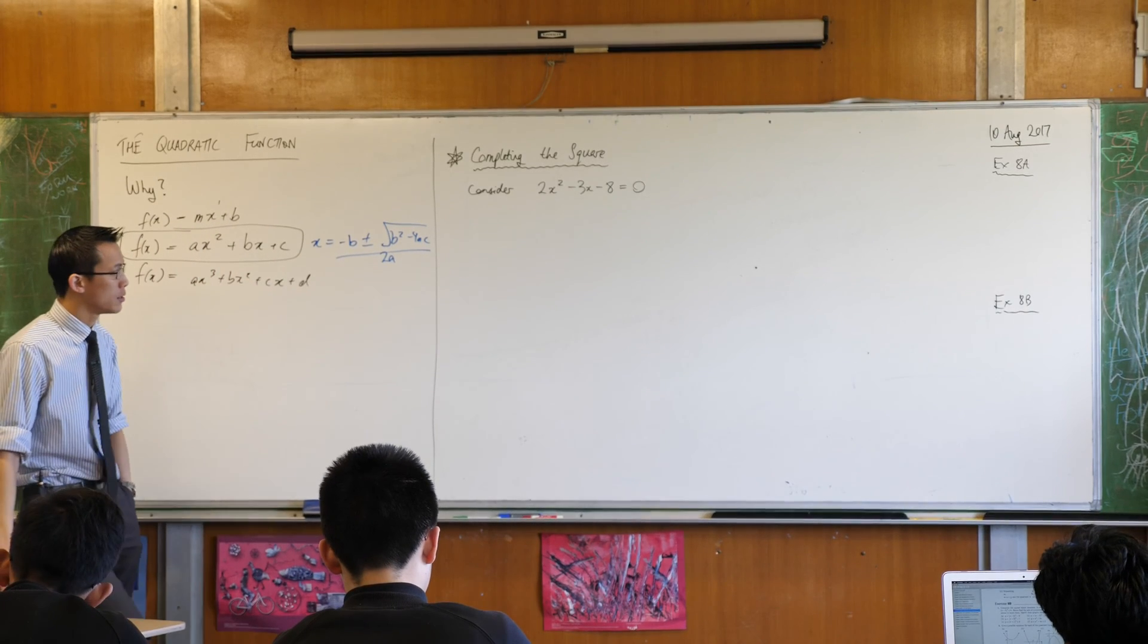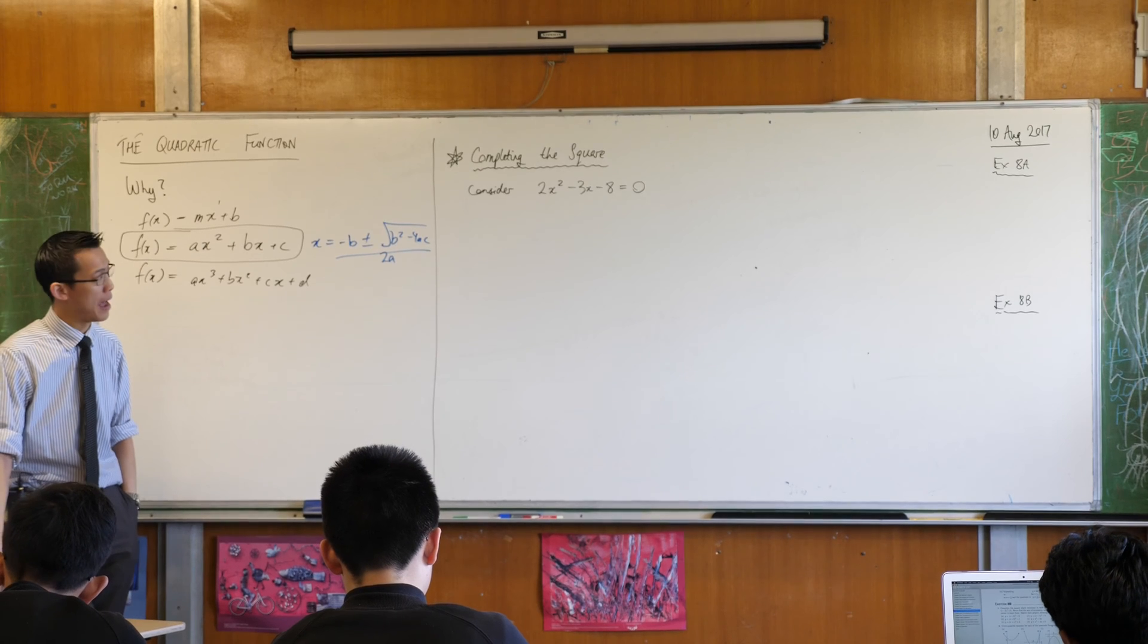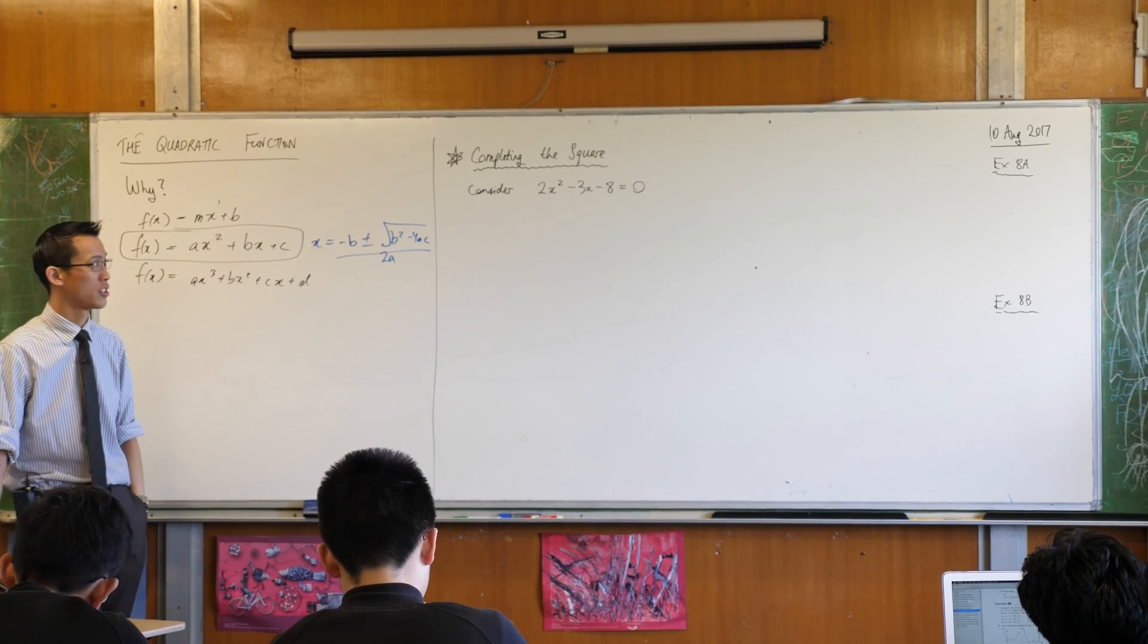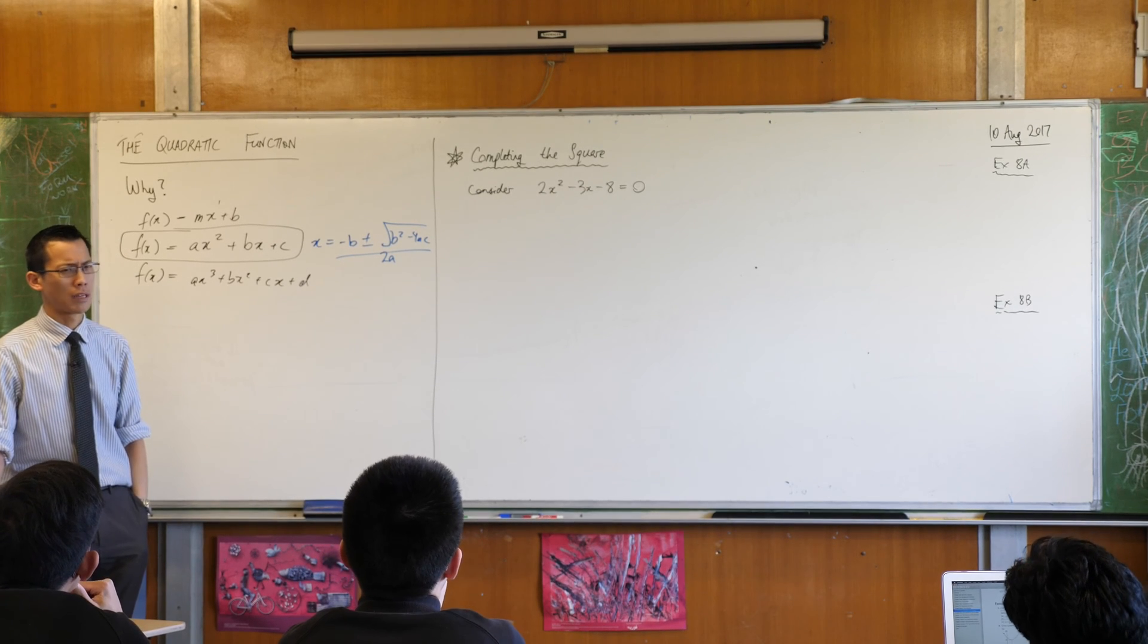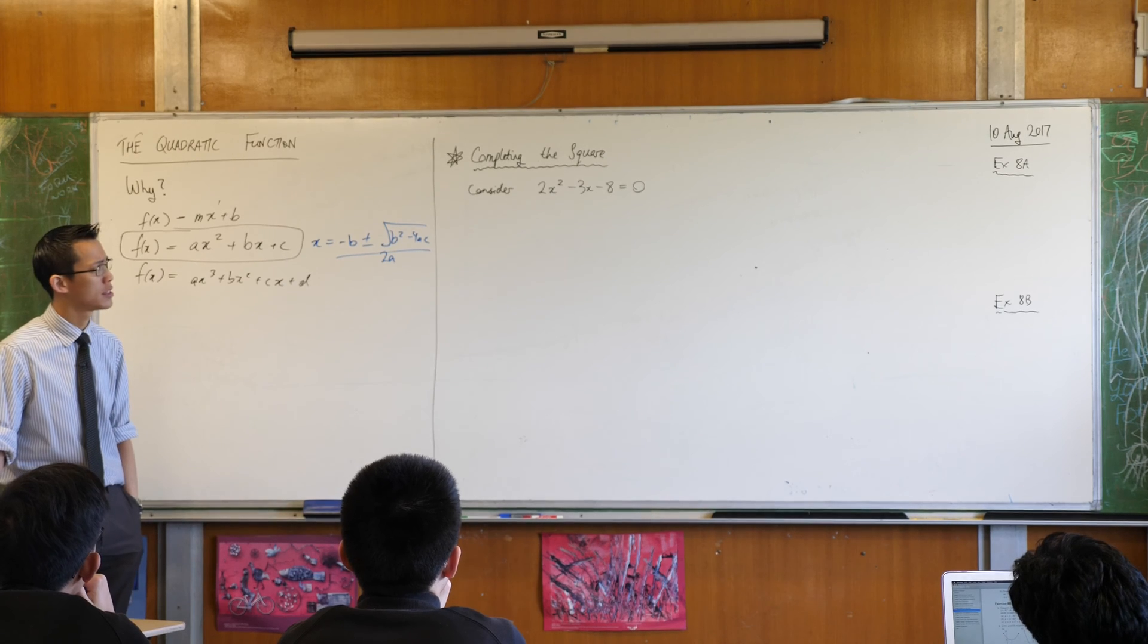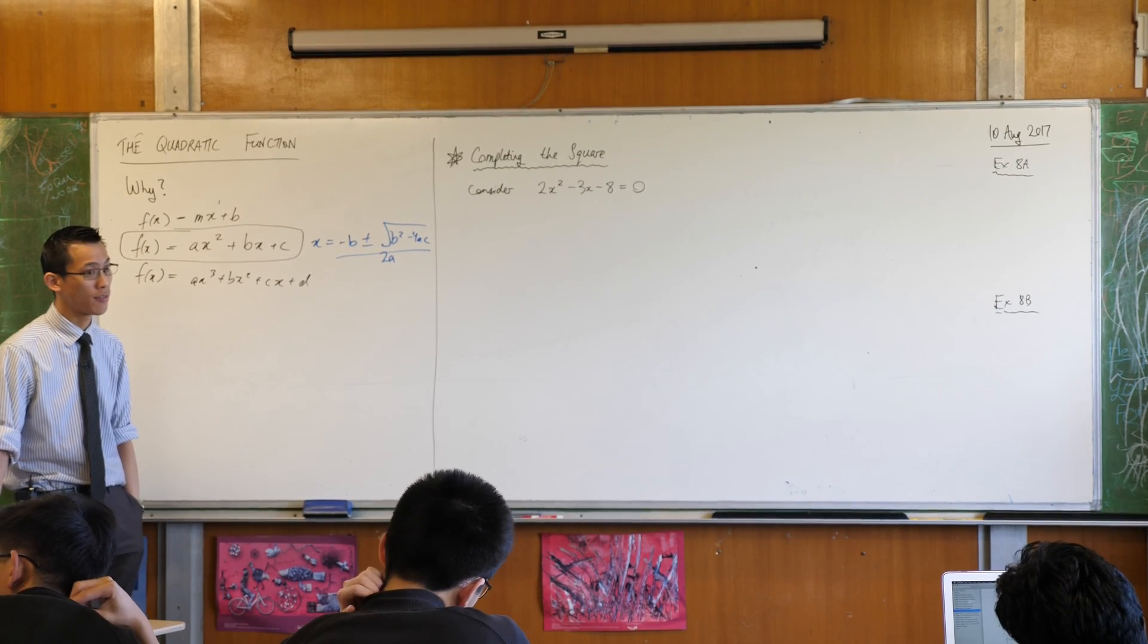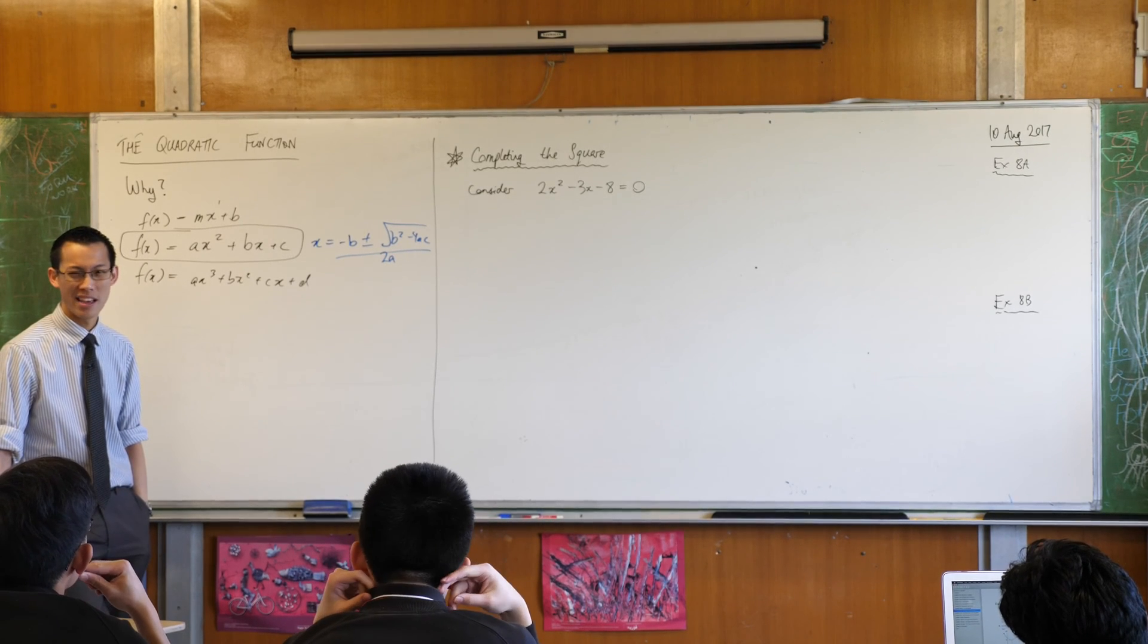So we're gonna have a look at this. Now one of the reasons why we have completed the square up our sleeve is because many questions will resist the ability to be factorized simply. Now I just made this up but when you have a look what kind of pair of numbers are you trying to think of? A pair of numbers that adds to negative 3 and multiplies to negative 16.